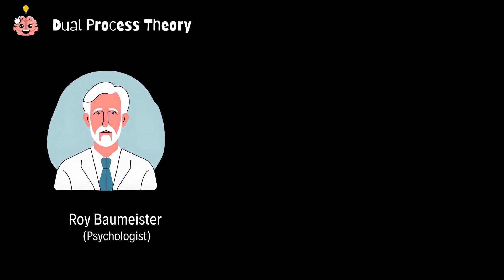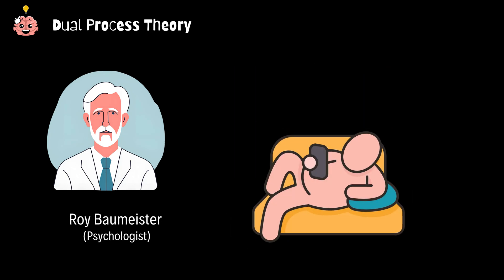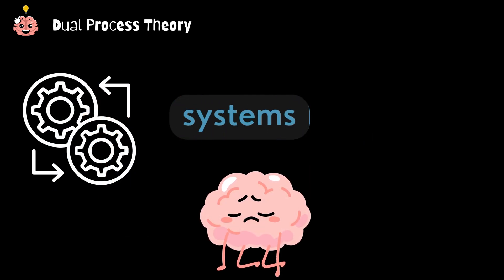Psychologist Roy Baumeister proved this with an experiment. He found that after making a bunch of hard decisions, people were more likely to make poor choices later. That's why you're more likely to eat junk food or skip the gym after a long day of adulting. Your brain flips back to system one because system two is just done.